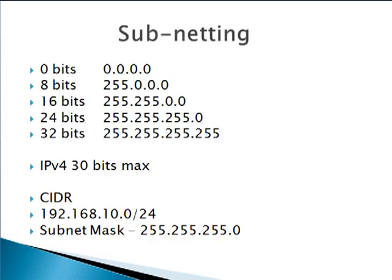Starting off with subnetting, this is the way I look at it. I do a lot of this in my head. It equates to all zeros for every eight bits — that is one full octet, or 255 in that octet. This is the address I'll be using for my example today: 192.168.10.0 with a CIDR notation or slash notation of 24. So we know our classful subnet mask will be 255.255.255.0.